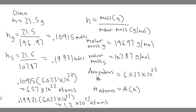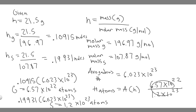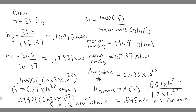So what we want to do is compare them by taking the number of atoms in gold divided by the number in silver. So we do 6.57 times 10 to the 22 divided by 1.2 times 10 to the 23. Keep in mind I rounded, so answers might differ slightly. What you get is 0.5475, which we'll round to 0.548. This is the ratio of gold atoms to silver atoms.